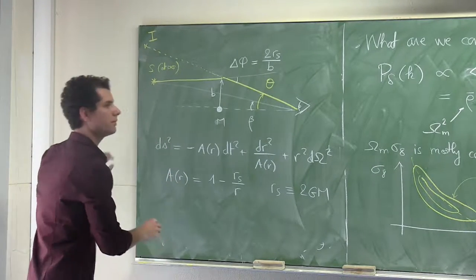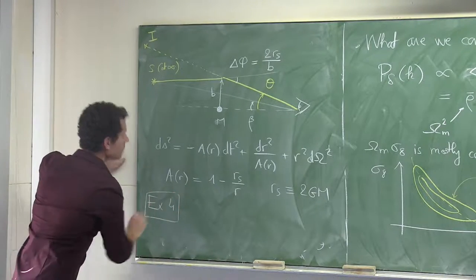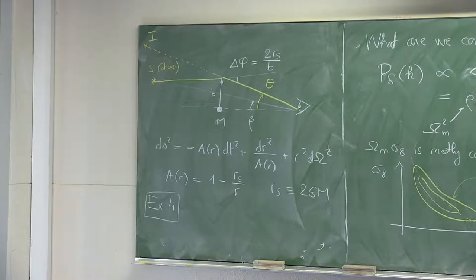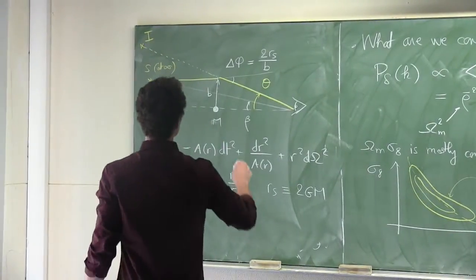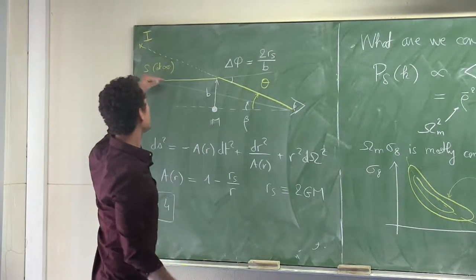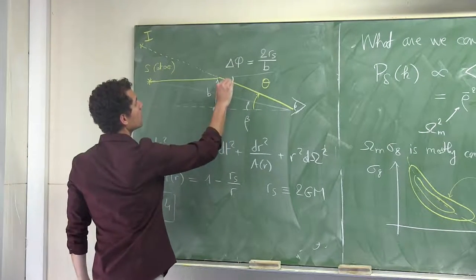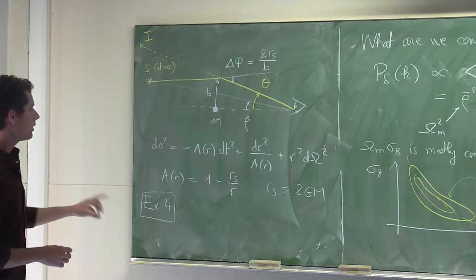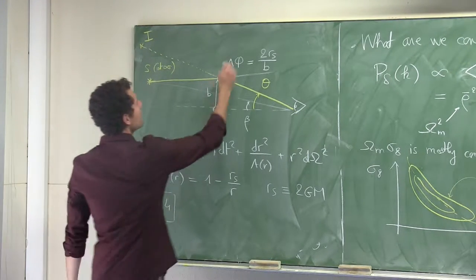If you calculate null geodesics using this metric and calculate the deflection of a light ray coming from infinity and arriving to infinity — so you integrate the whole thing — what you get is that the deflection angle δ is 2Rs over b, where b is the impact parameter. And then, with a bit of geometry, you can work out the lens equation relating the unlensed position of the source to the lensed position of the image. There are some distances involved: the distance between source and lens, the distance between lens and observer. The deflection delta is related to theta, and delta here is the net deflection.